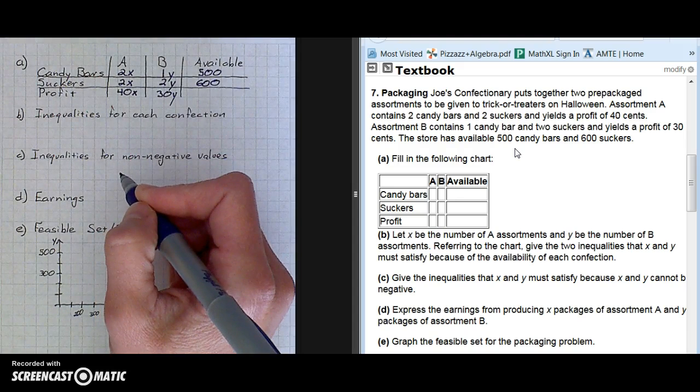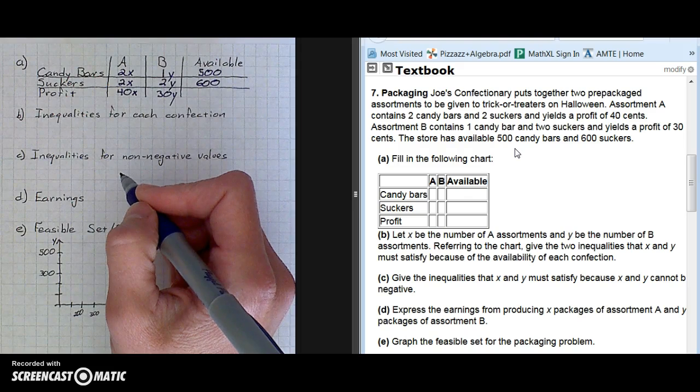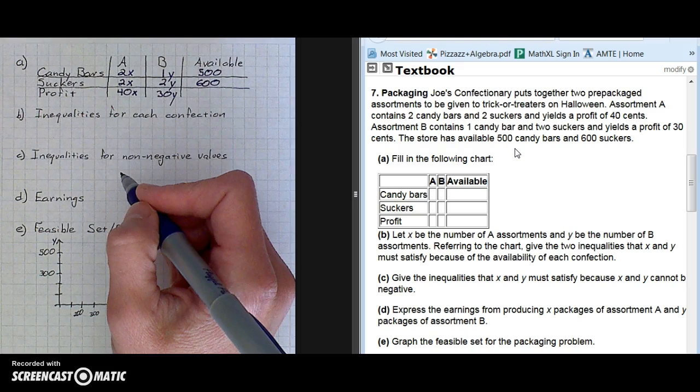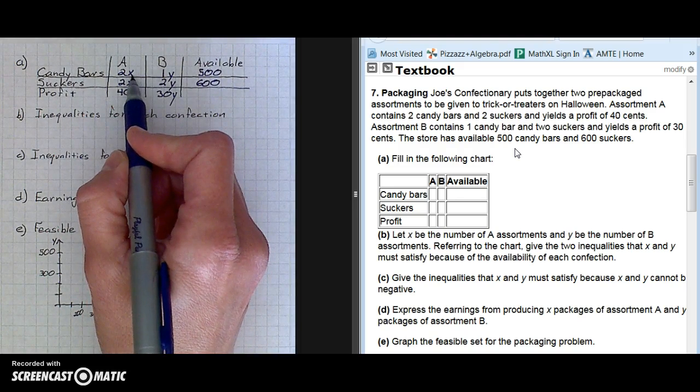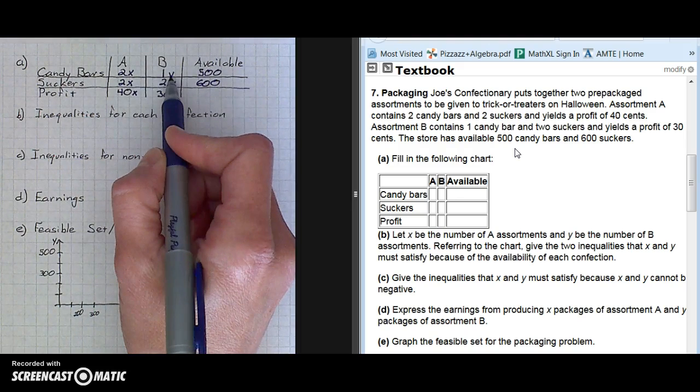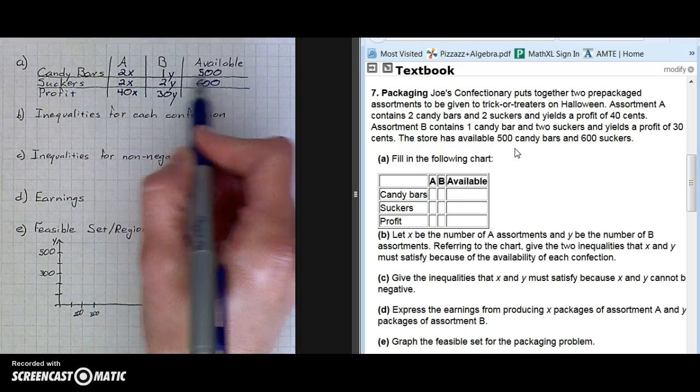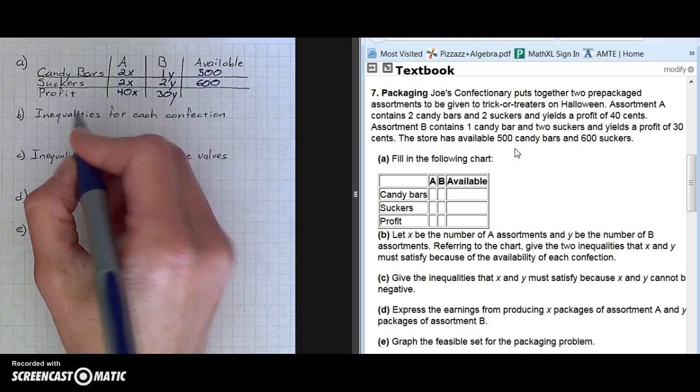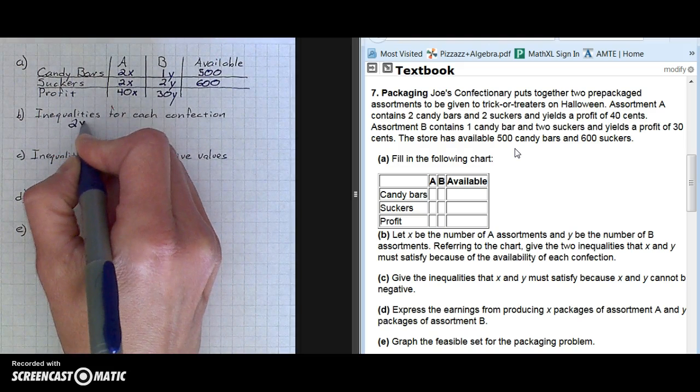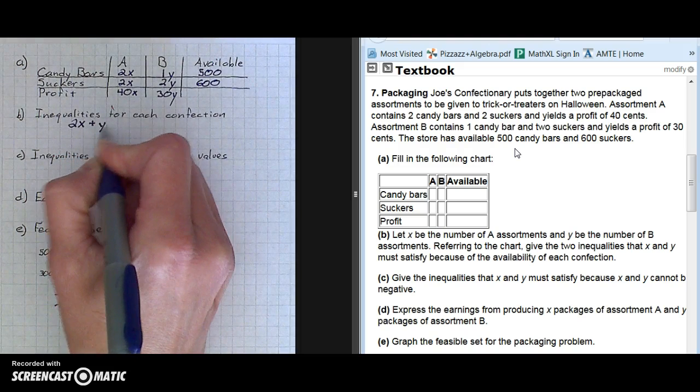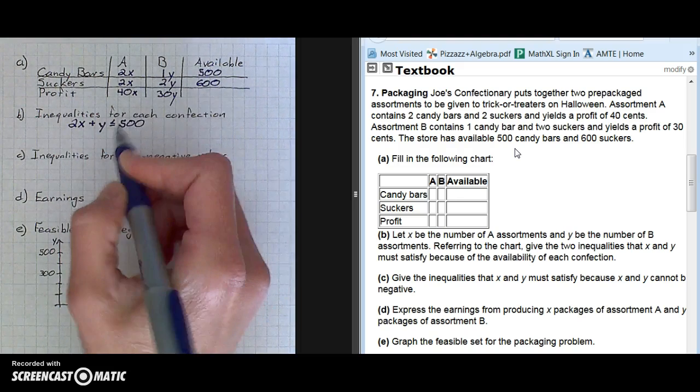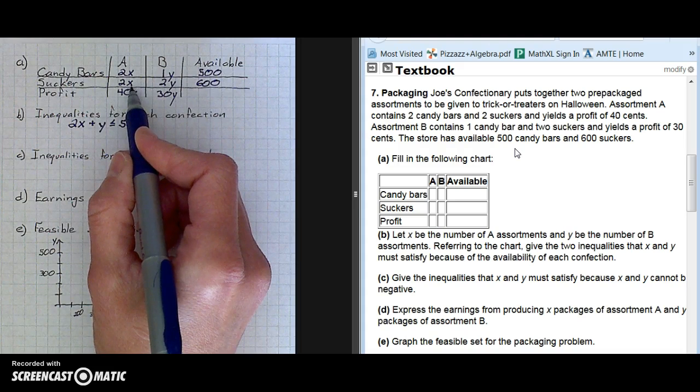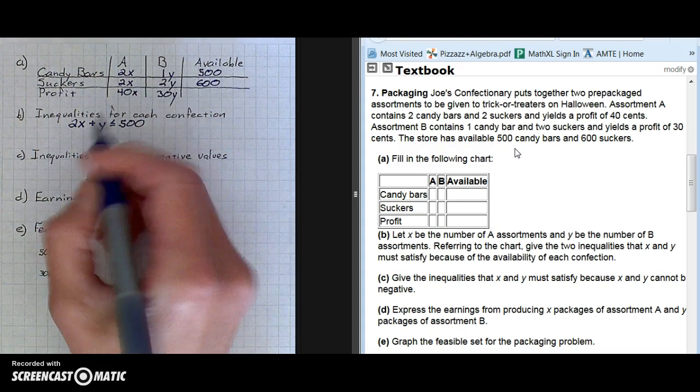Referring to the chart, give the two inequalities that X and Y must satisfy because of the availability of each confection. So assortment A, there are two candy bars needed for it, and for assortment B, there's one candy bar with at most 500 available. For example, the inequality is 2X plus 1Y is less than or equal to 500. The suckers information will provide the second inequality.